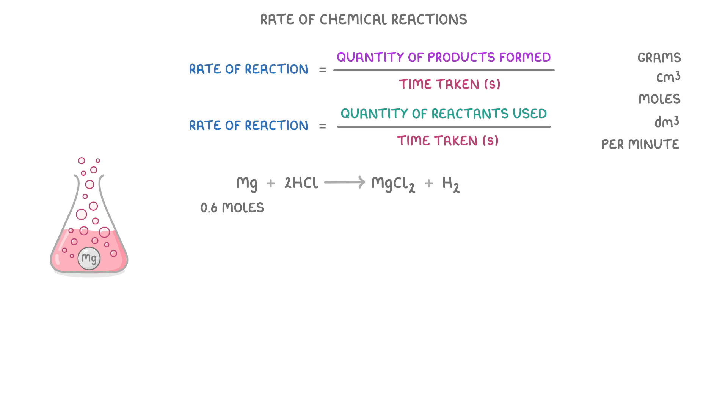For example, if we were told that 0.6 moles of magnesium were used in 2 minutes, then to calculate the rate in moles per minute, we would just do 0.6 divided by 2, to give us 0.3 moles per minute. So it really isn't any different to before. You just have to be careful about which units they want the answer in.